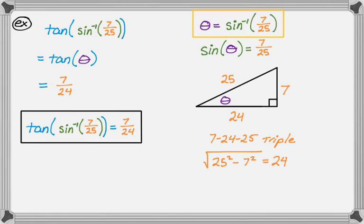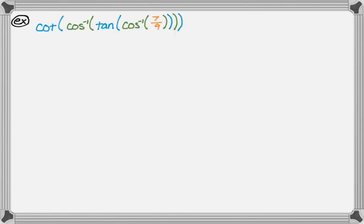We can do any number of problems like this. Sometimes we just combine them together, so we'll get something that looks like this: cotangent of the inverse cosine of the tangent of the inverse cosine of 7/9. So it looks to me like we're just going to do one problem, then another problem. First, start with this, so start with the innermost function.